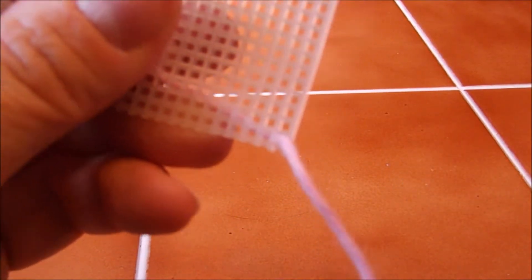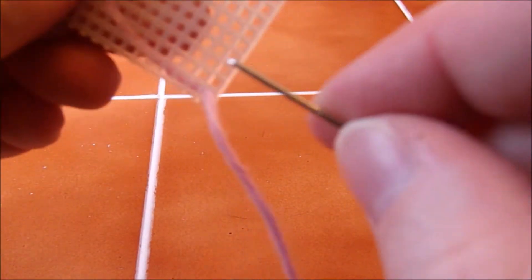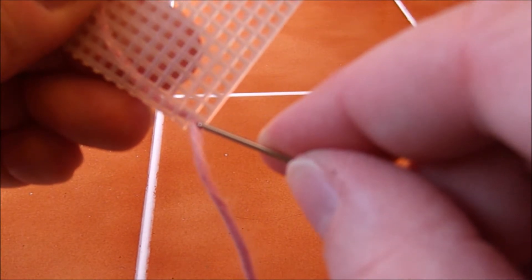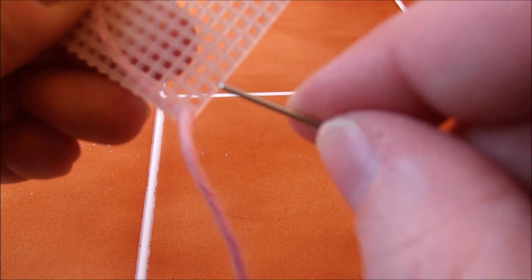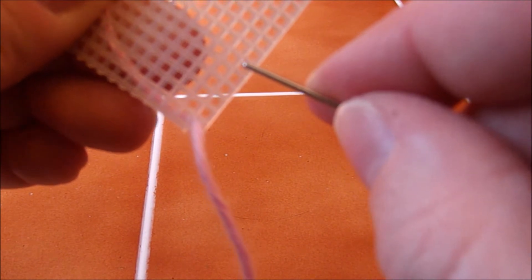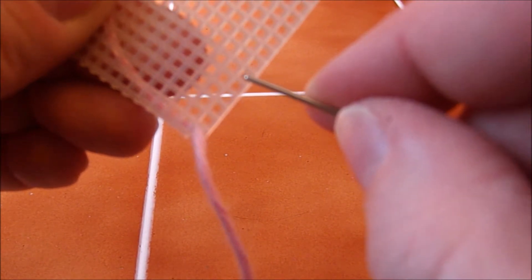And to make the chevron pattern, what they did was counted six. So starting with the hole you came through, one, two, three, whoops, three, four, five, six. And then up five, counting the hole that you start with. So one, two, three, four, five.